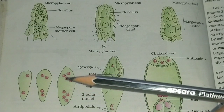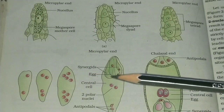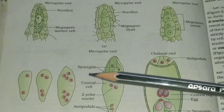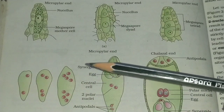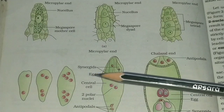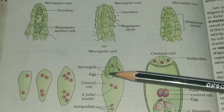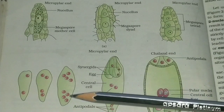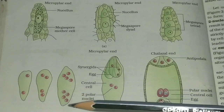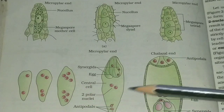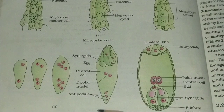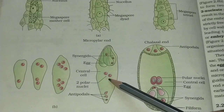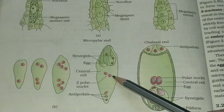These nuclei are then rearranged. On the micropylar end, of the four nuclei present, three help in the formation of two synergid cells and one egg cell, while one nucleus moves to the center. Similarly, on the chalazal end, of the four nuclei present, three help in the formation of antipodal cells, and one nucleus moves to the center — together forming two polar nuclei.